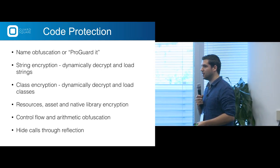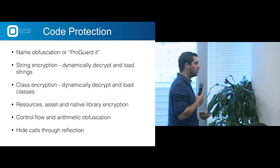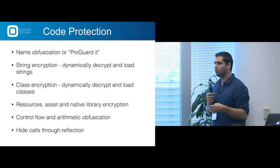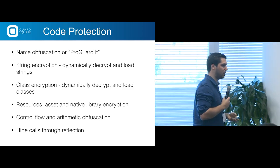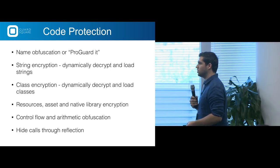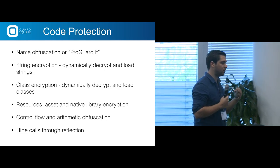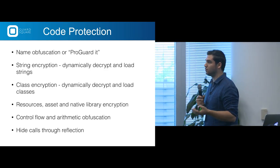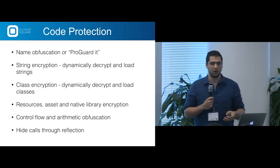You can add control flow and arithmetic obfuscation. With control flow, you add many extra paths to your code so a reverse engineer has to figure out what all the paths are doing — but when the application runs, there's only one correct execution path. The code is blown up for the reverse engineer, but the app runs fine. You can also hide calls through reflection, which is one of my favorites: instead of a direct method call to a class, you see a call to the reflection framework with a string defining which class and method to invoke.